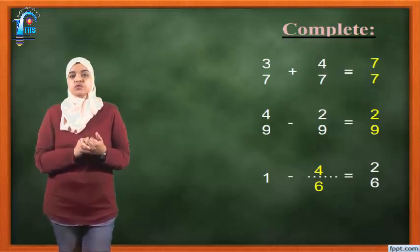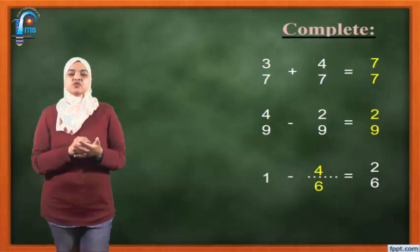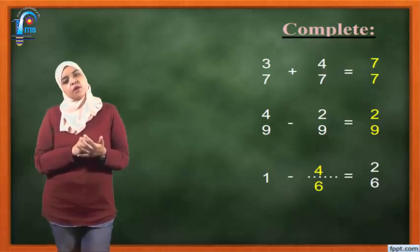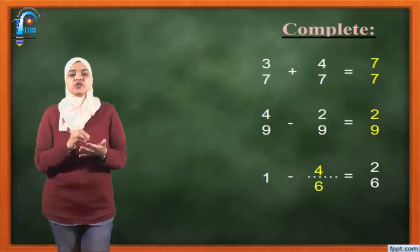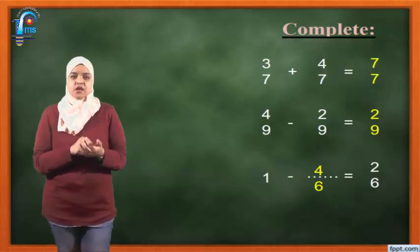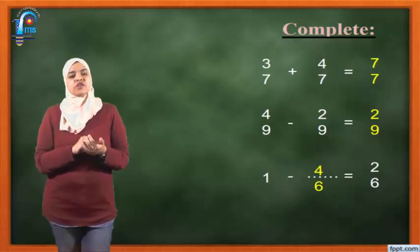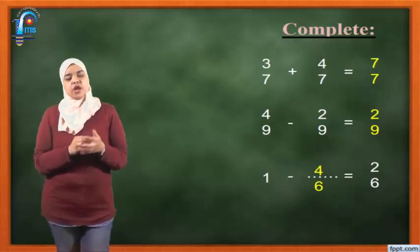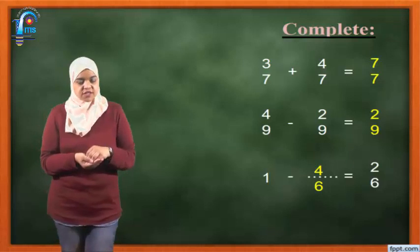1 minus 1 equals 2 over 6. Here we need to borrow — cross the 1 and put it as a fraction. How? By the denominator number. The denominator number here is 6. So we cross 1 and put 6 over 6. So 6 minus 1 equals... 6 minus 4, and put the denominator the same, which is 6.